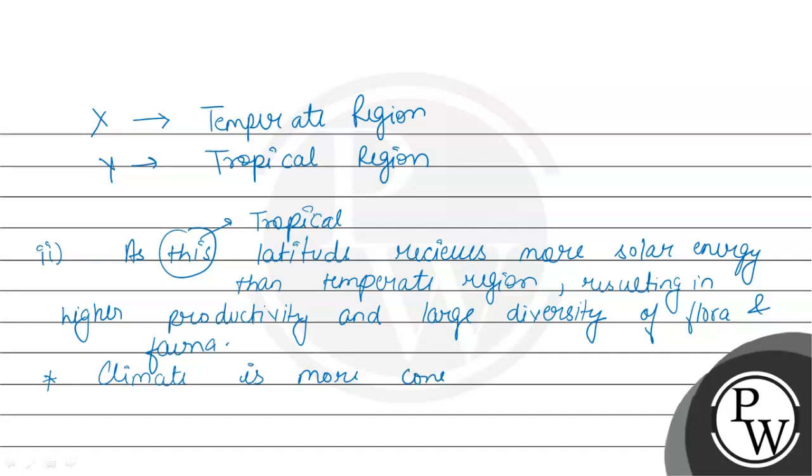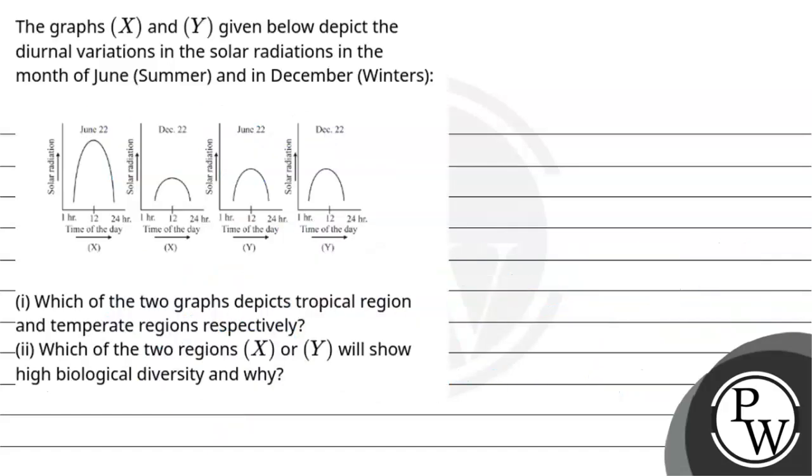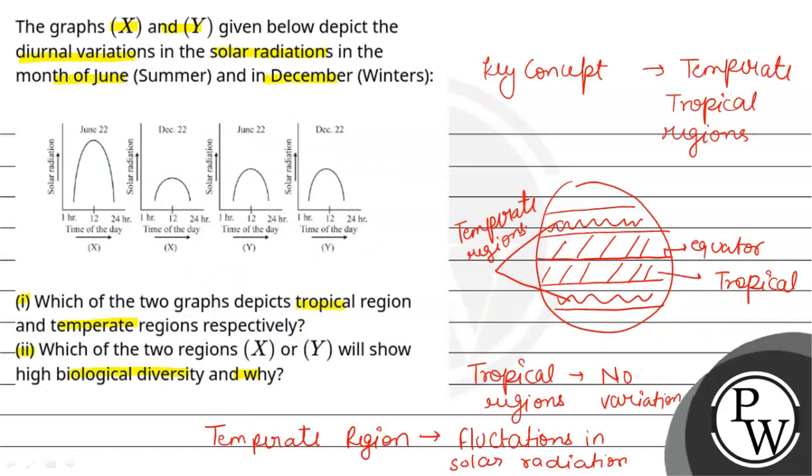Climate is more consistent - it is one of the most important factors. I hope you understood the concept of the tropical and the temperate regions' fluctuations and how the biodiversity density changes. Thank you.